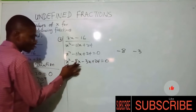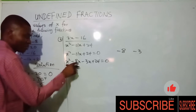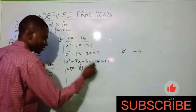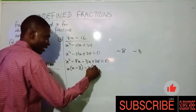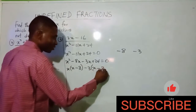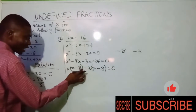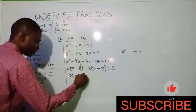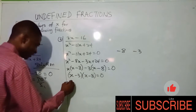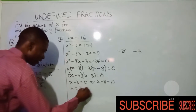Replacing minus 11x with minus 8x minus 3x, we get: x squared minus 8x minus 3x plus 24 equals zero. Grouping: from the first two terms, x is the common factor giving x(x minus 8). From the last two terms, 3 is the common factor giving minus 3(x minus 8). The brackets are the same, so we factor as (x minus 8)(x minus 3) equals zero.